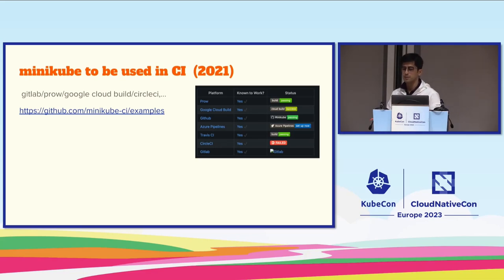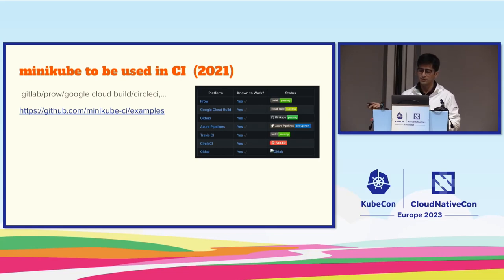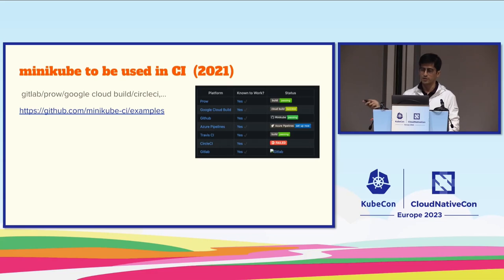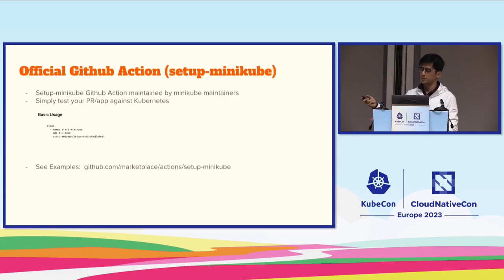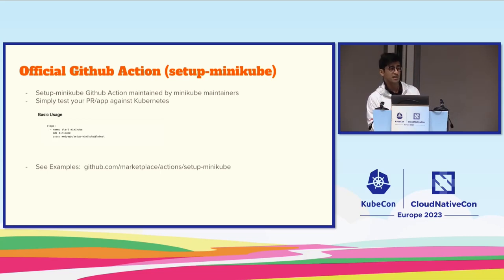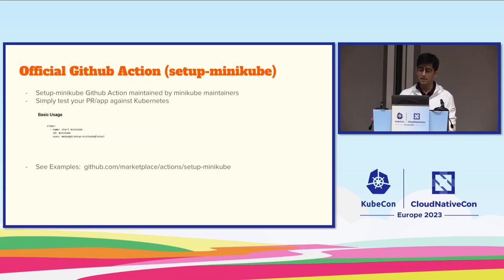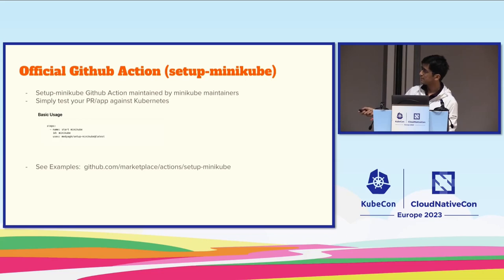In 2021 we also invested in making Minikube work in CI. Even though that's not the main usage, there's a lot of demand for it. You can see examples of Minikube running in CircleCI, Travis, Azure, GitHub, GitLab — go to the Minikube CI org on GitHub. We also invested in the setup-minikube GitHub Action, maintained by Minikube maintainers. You can test your PRs in GitHub Actions against Minikube by simply adding `medyagh/setup-minikube`, and there are great examples for building Docker images against Minikube on your PR.